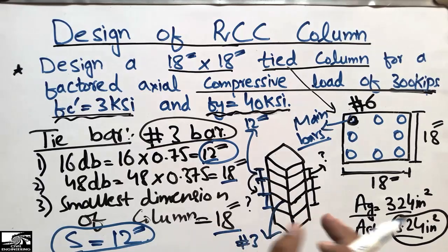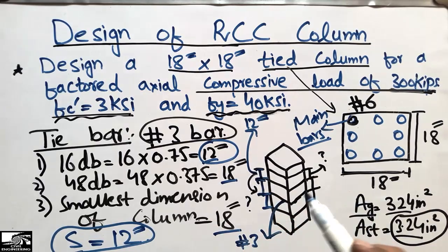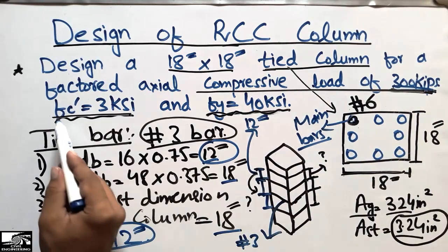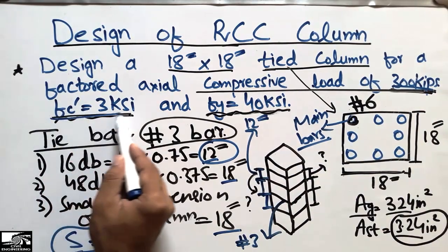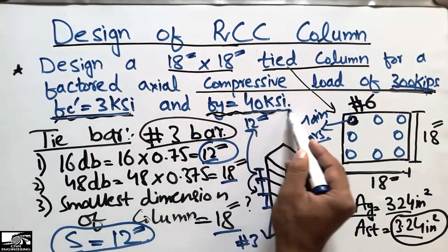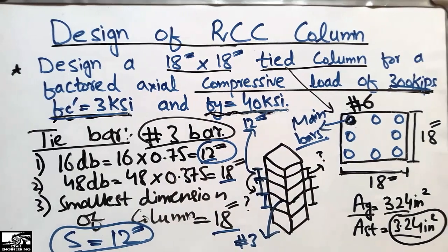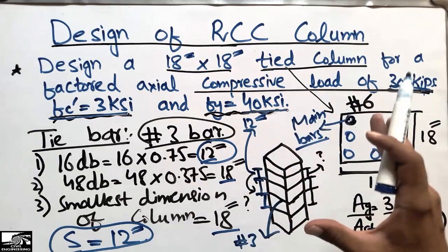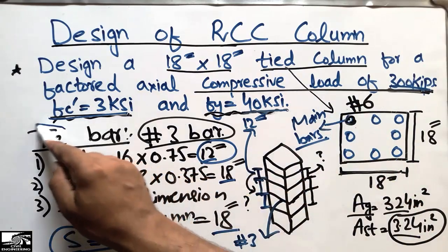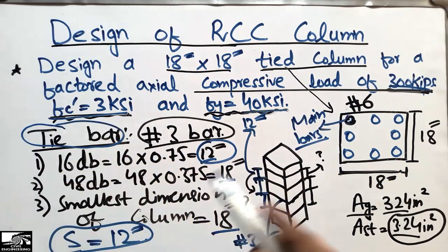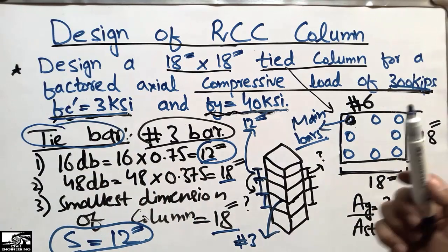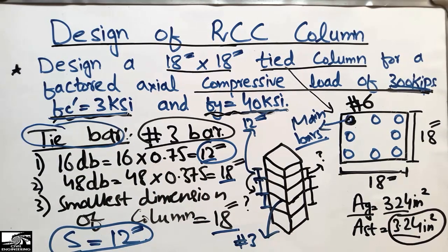We will use #3 tie bars at 12 inches spacing throughout the column. This completes the design of the RCC tied column for a uniaxial factored load of 300 kips, with concrete strength 3 ksi and steel yield strength 40 ksi. Don't forget to subscribe for daily civil engineering videos — thank you for watching.